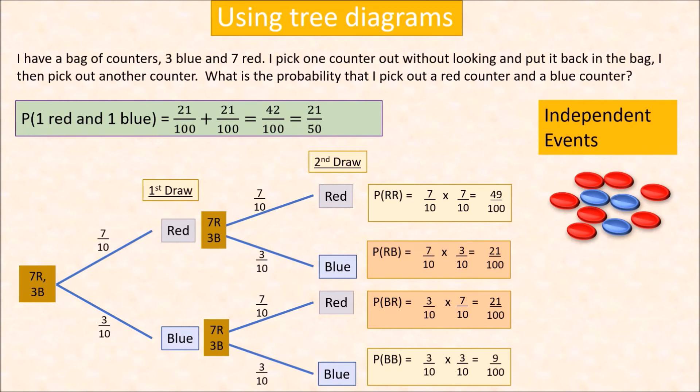This is called independent events because the first draw and the second draw do not affect each other. The probabilities in the second draw are the same as the probabilities in the first draw.